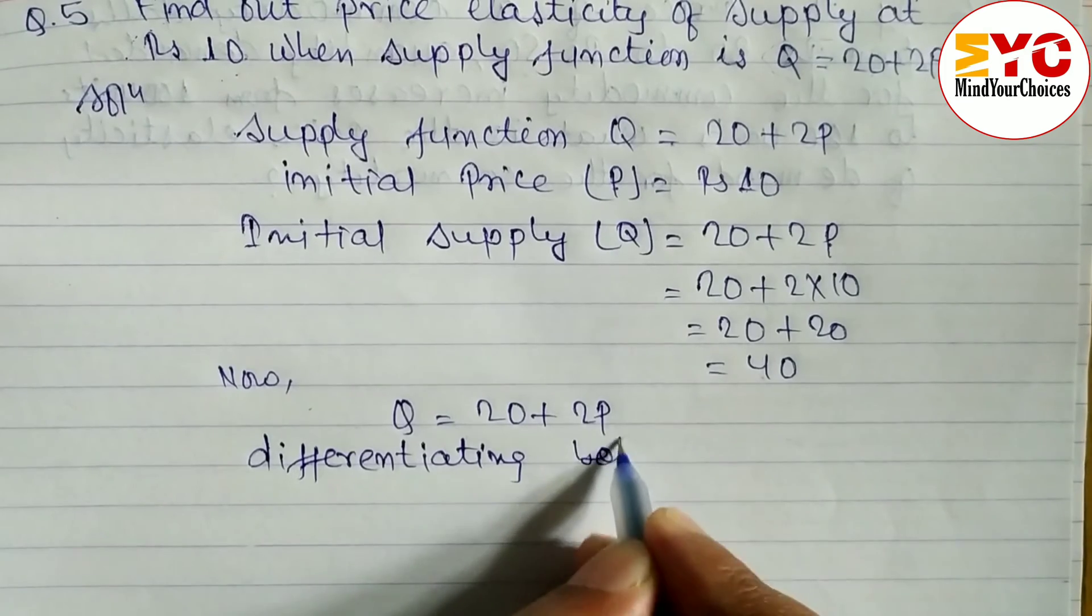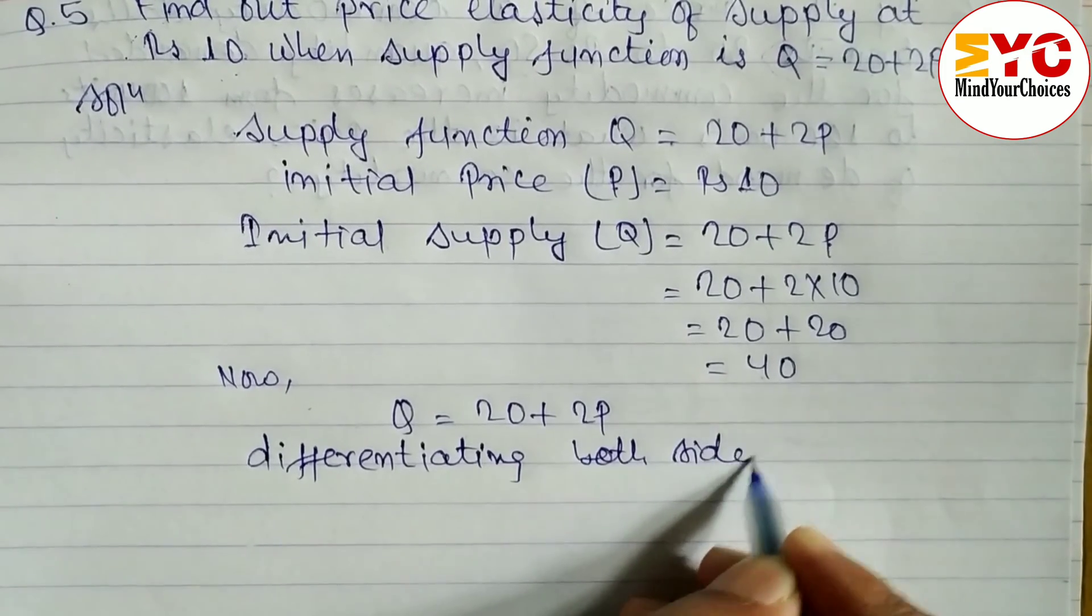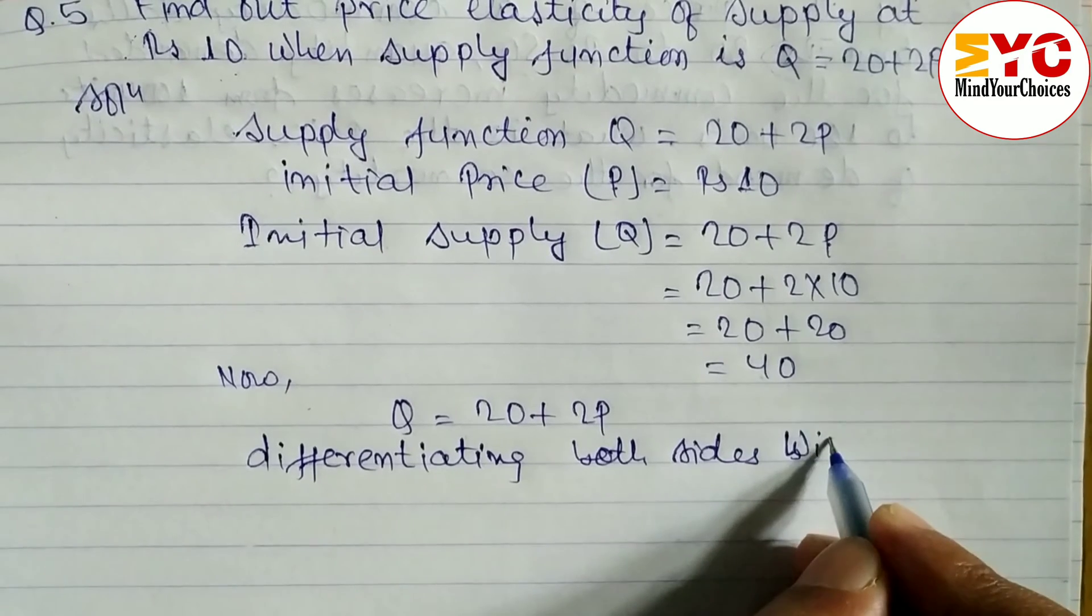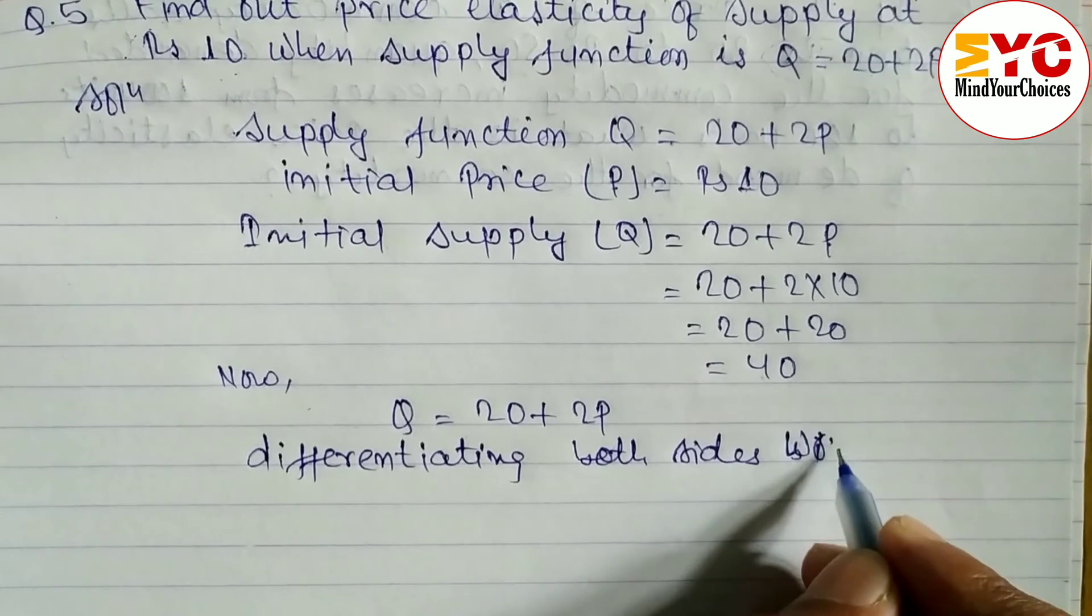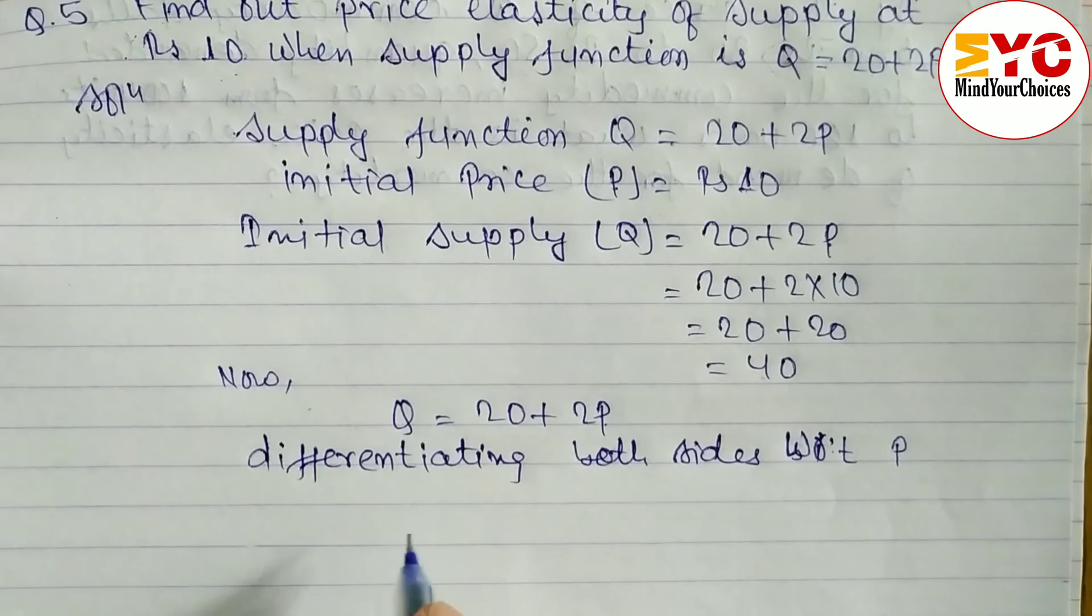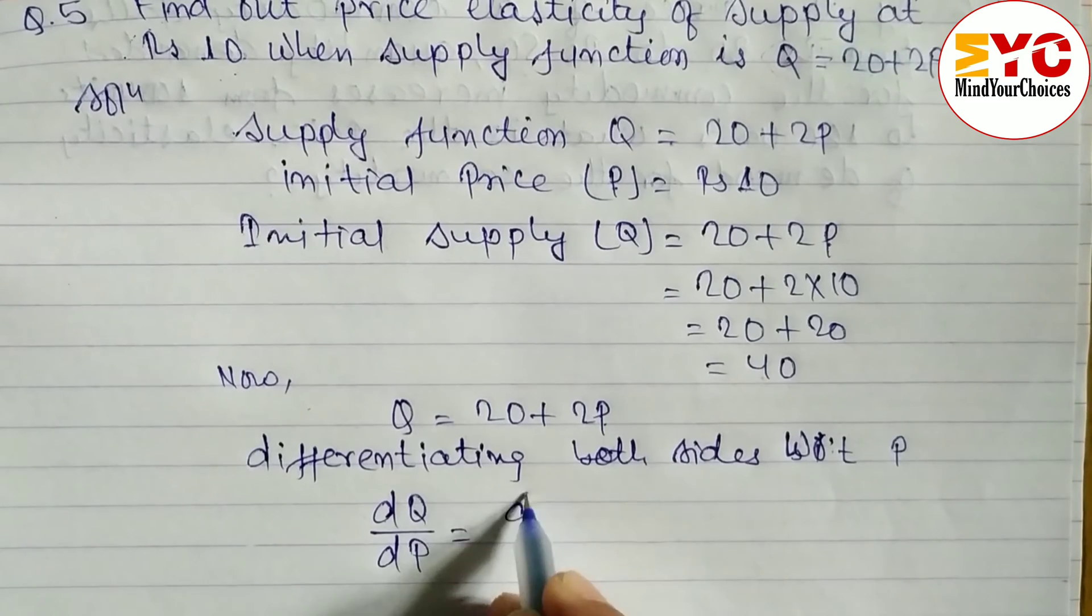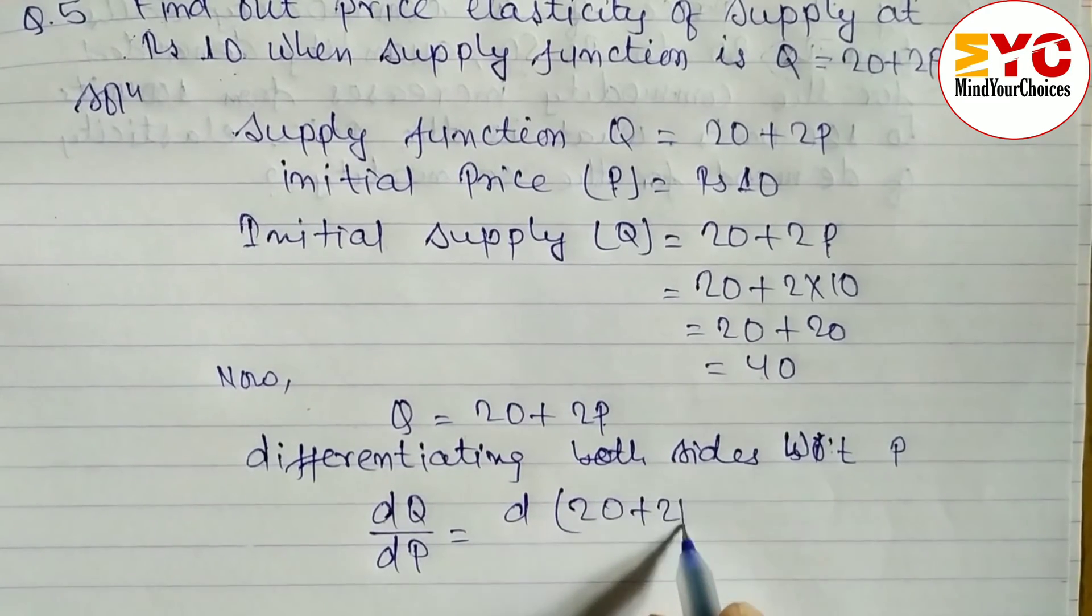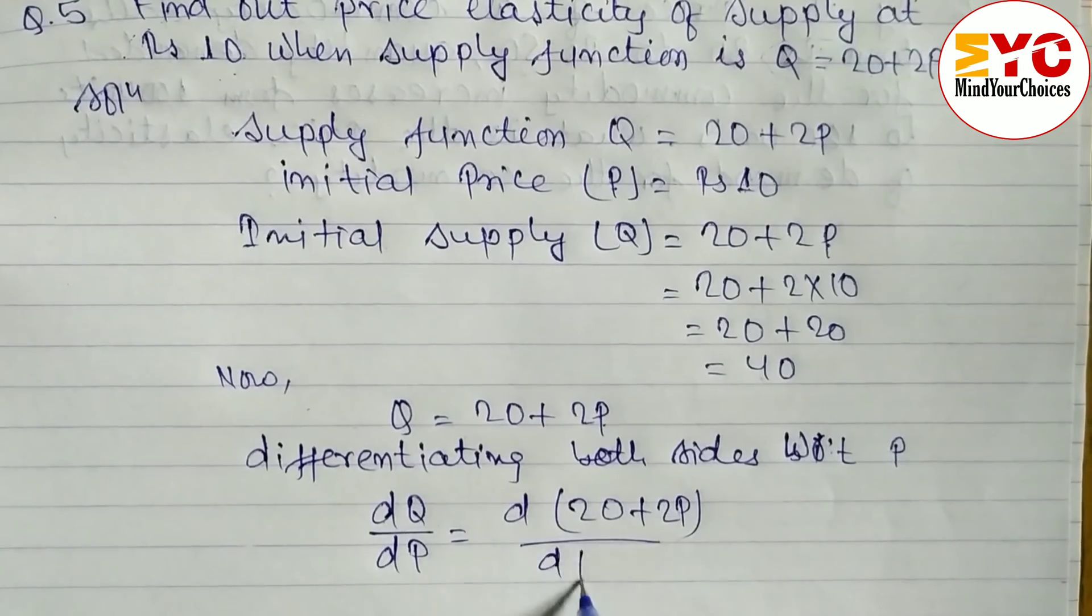Differentiating both sides with respect to P because there is P. So dQ/dP is equal to d(20 + 2P)/dP.